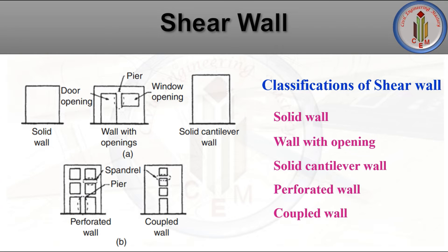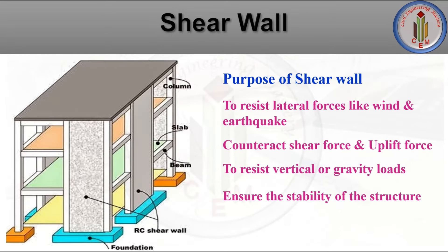The classifications of shear walls include: solid wall, wall with openings, solid cantilever wall, perforated wall, and coupled wall. These are the main classifications of shear wall types used in construction.